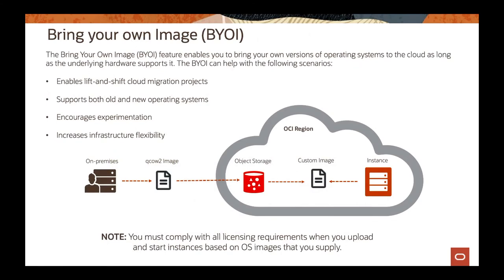Apart from that, you can actually bring your own image. You can have an image up and running on-premises and bring that over to OCI. The way you do it: if you have an image running on-premises, you can export that image in QCOW2 format or VMDK format, place that image in an object storage, and then from that object storage create a custom image. From there, you can launch the instance. This is ideal for images you have created with your own packages and patches — where you have a controlled environment on-premises and want to bring that into OCI.